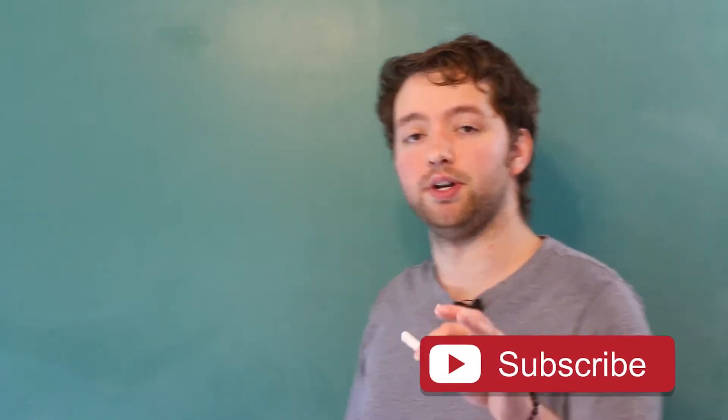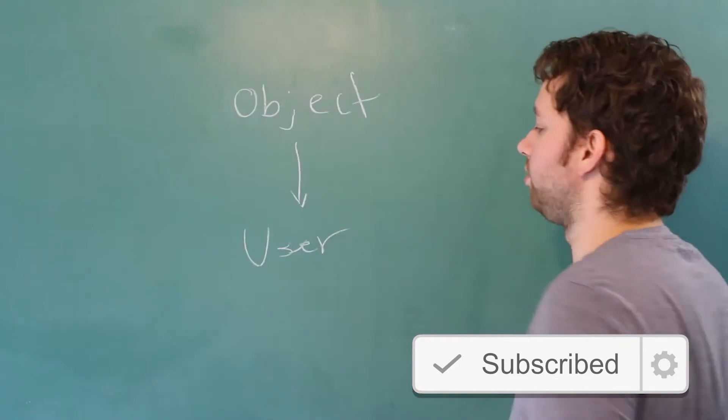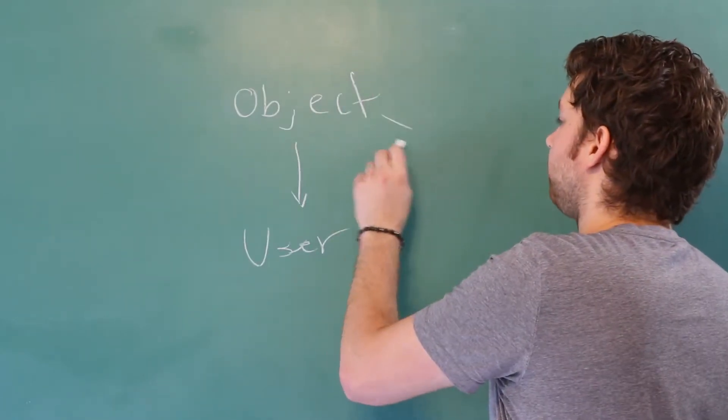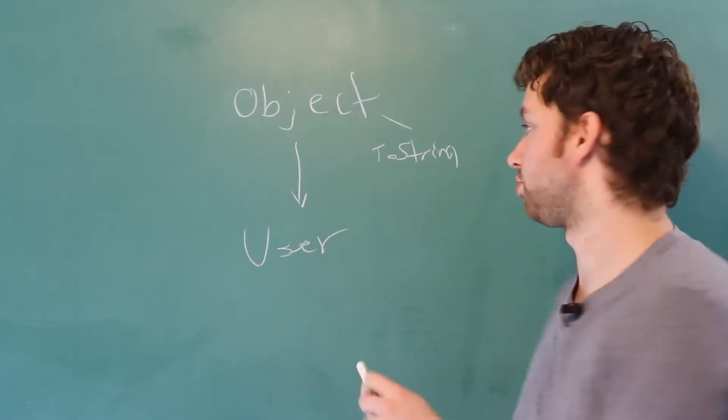So jumping a little bit into inheritance, that toString comes from a class we inherit from. So user is ultimately going to inherit from object. And one of the things inside of object is toString. Inside of user, we can create our own toString method.